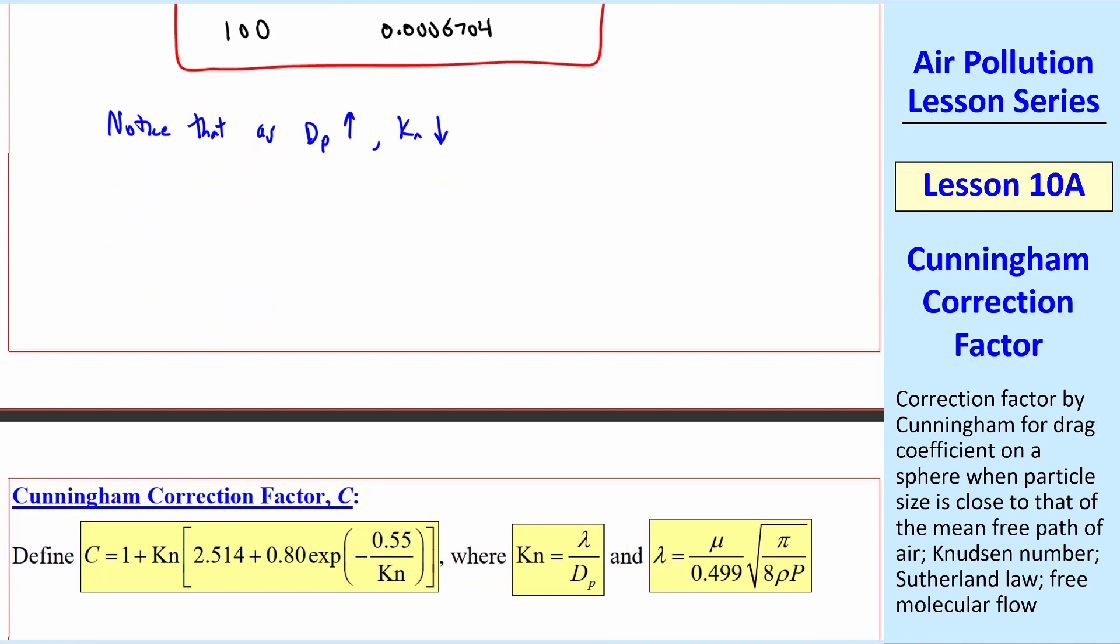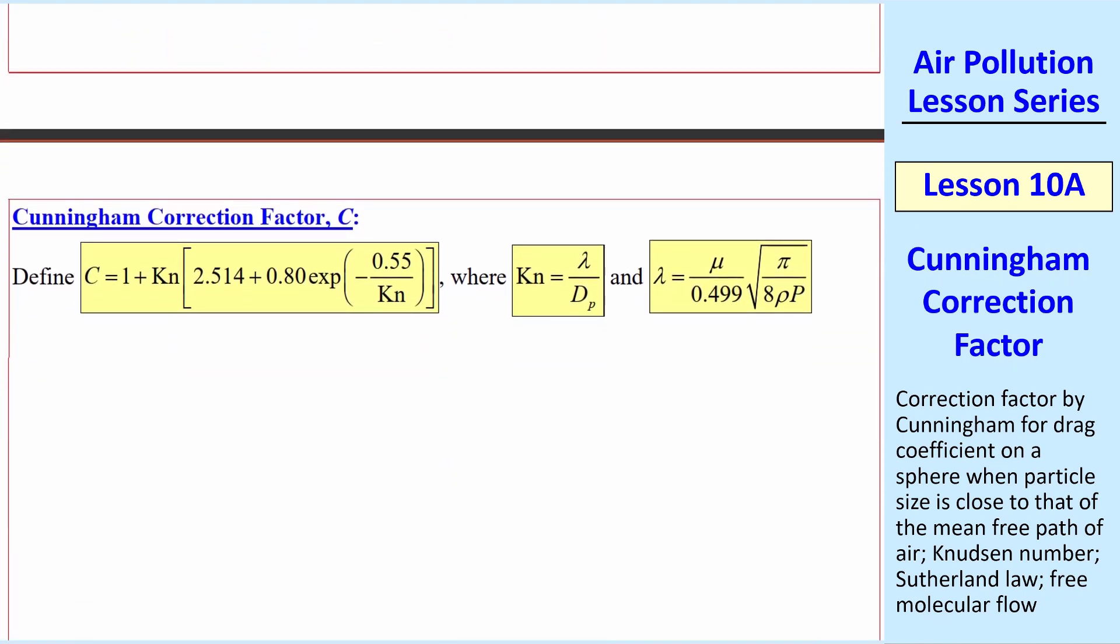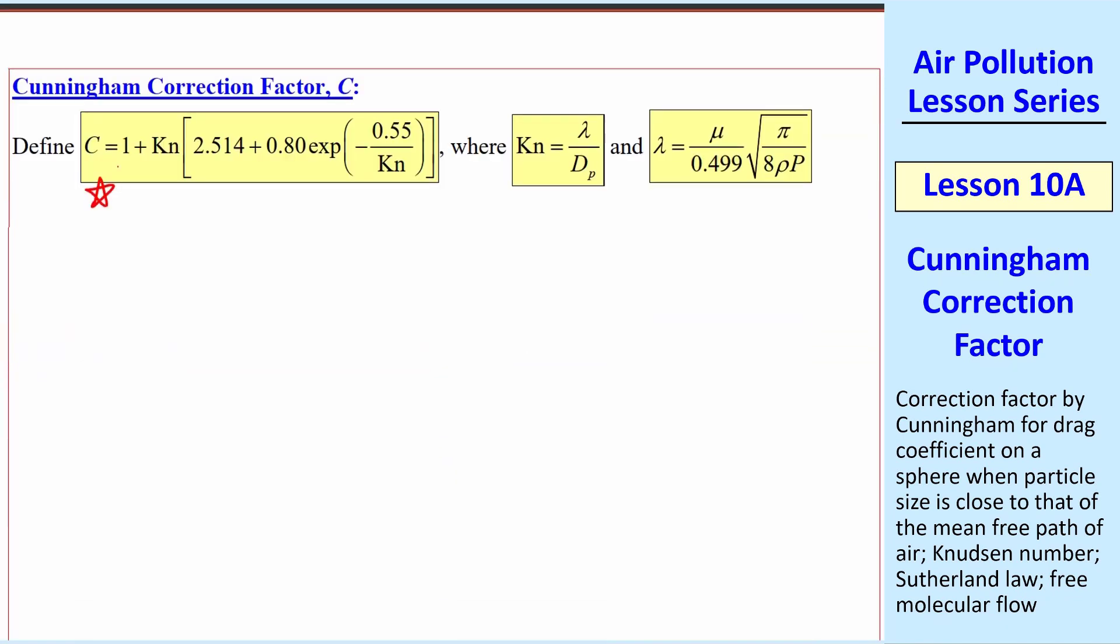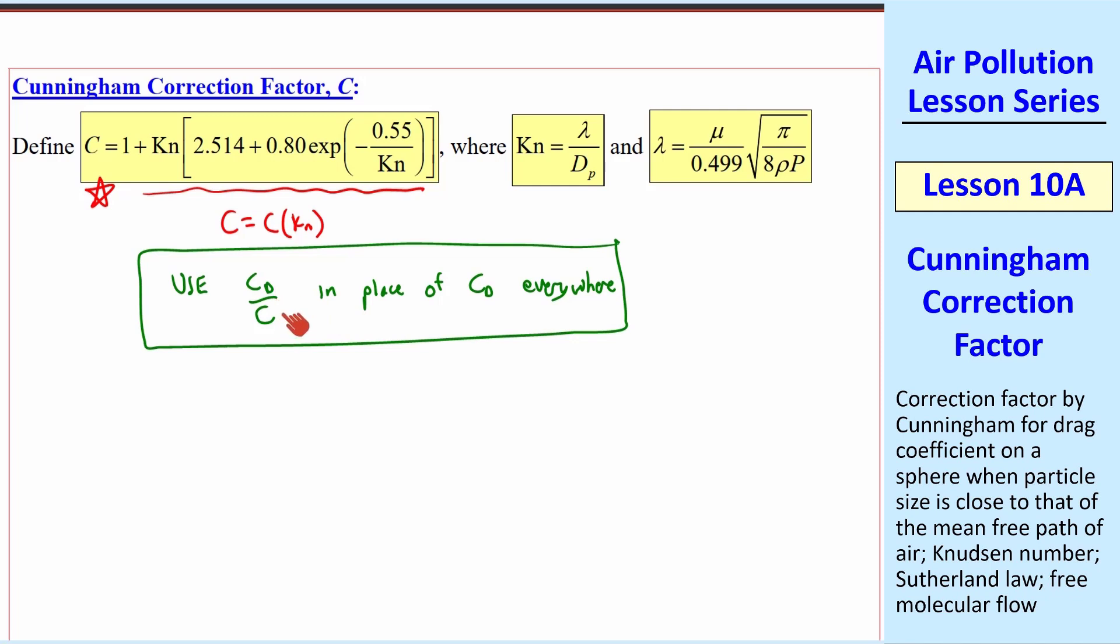Now finally, we can define the Cunningham correction factor, C. Here's the equation for Cunningham correction factor. You see it's a function only of Knudsen number. So once we calculate Kn, we can calculate C easily with this equation. And as I said, it's a kind of fudge factor, which goes in the denominator. And we use Cd over C in place of Cd everywhere that we have a Cd.